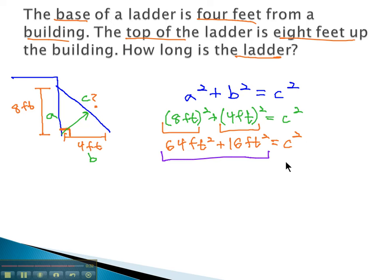Combine like terms, 64 plus 16 is 80 square feet, equals c squared. And again, the very last step, it's always the last step, is to take the square root, so we know what c is equal to. We unsquared the c, and using our calculators, the square root of 80 is about 8.94 feet.